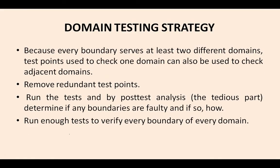Every boundary — as seen in the previous diagram — the domain looks like a collection of points, with the ends called boundaries and the middle being the interior of the domain. Because every boundary serves at least two different domains, test points used to check one domain can also be used to check the adjacent domains. Every domain is connected to at least two different domains, and we have to find checkpoints to check those adjacent domains as well. If we find any redundant or duplicate points, we can remove them.